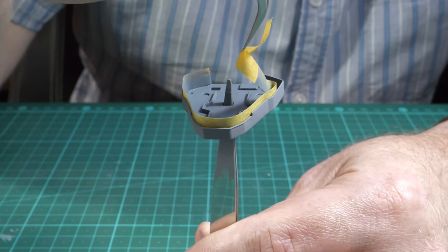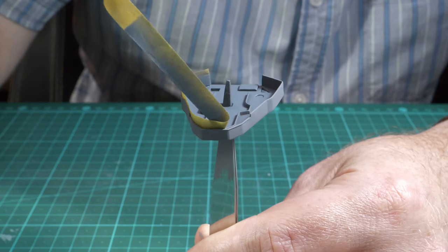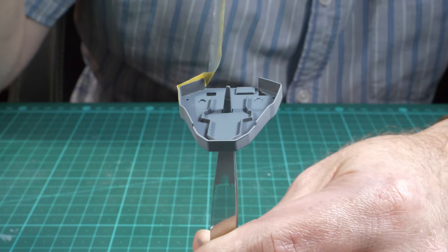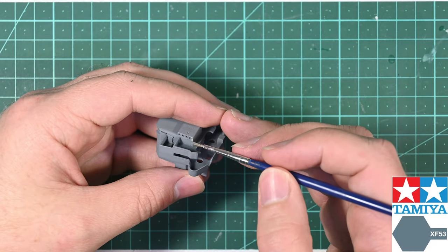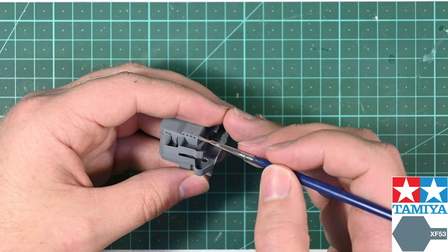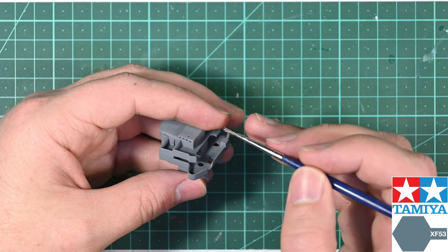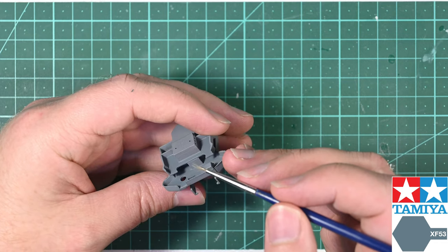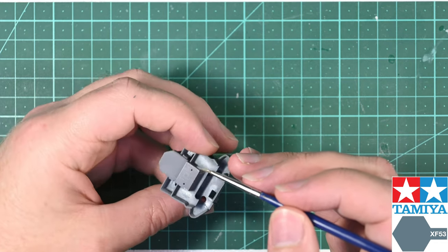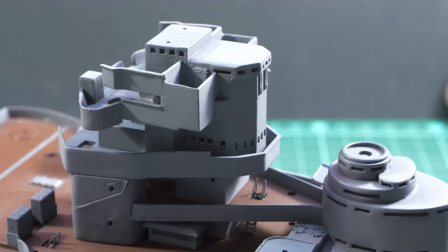Once the paint has dried I then remove the masking tape and check my work. There are a few touch-ups here and there that I need to make. I do this with a brush. It's not going to be noticeable. There's no need to do small touch-ups with an airbrush.